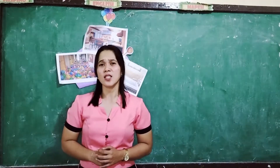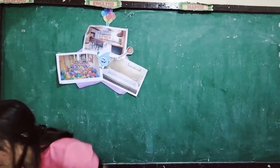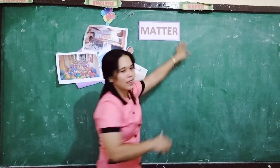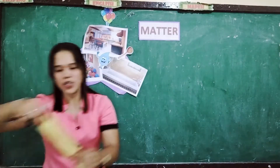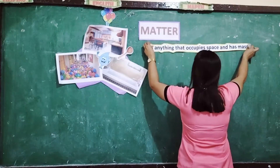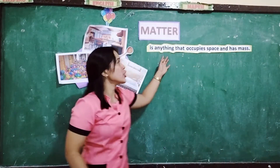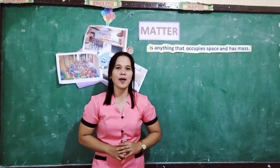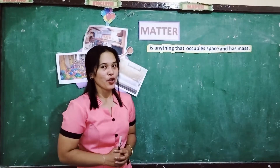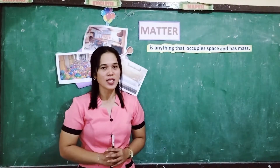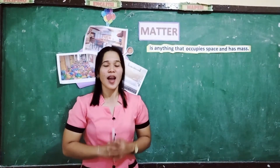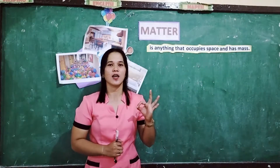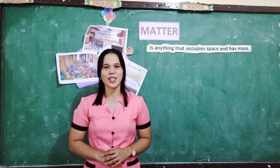So, what is matter? Matter is anything that occupies space and has mass. Meaning, anything in this earth with a mass and space, whether it's light or heavy, is matter. Matter has three states, and we will talk about each one individually.